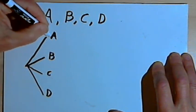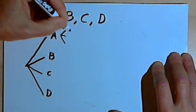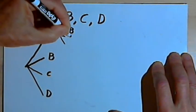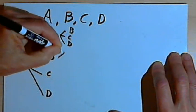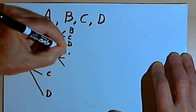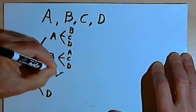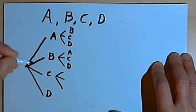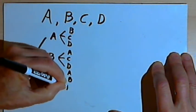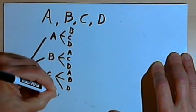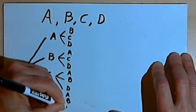Now if A is the first letter in the arrangement, there are three different letters that I could have as the second letter: B, C, or D. If B is the first letter, then my second letter could be an A, a C, or a D. If C is the first letter, then the second letter could be an A, a B, or a D. And if D is the first letter, my second letter could be A, B, or C.